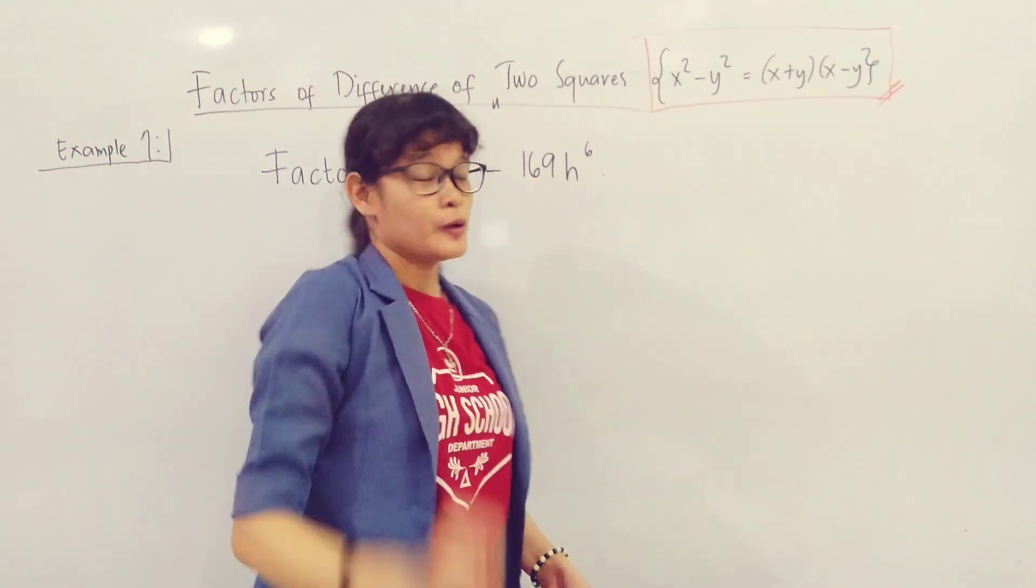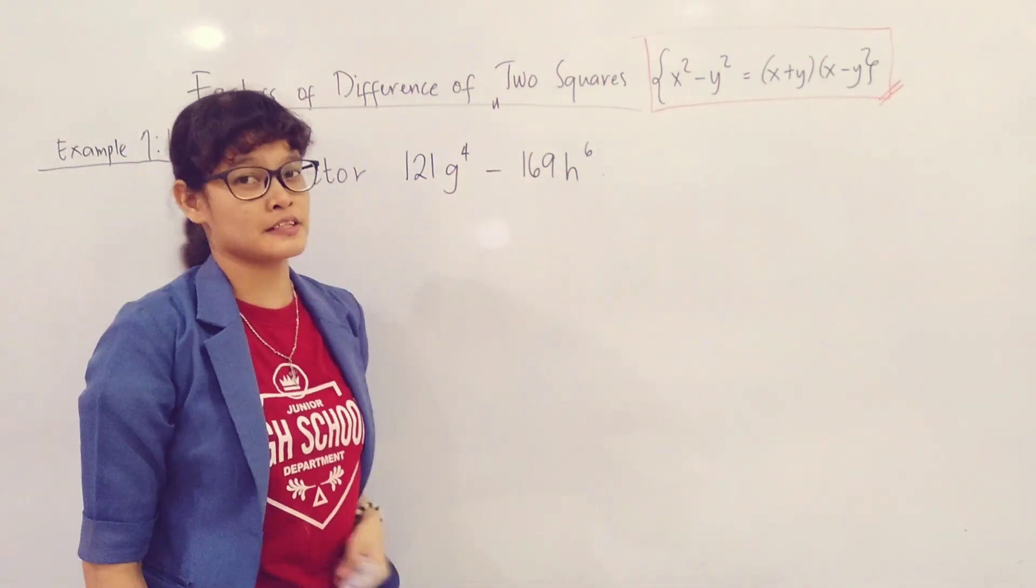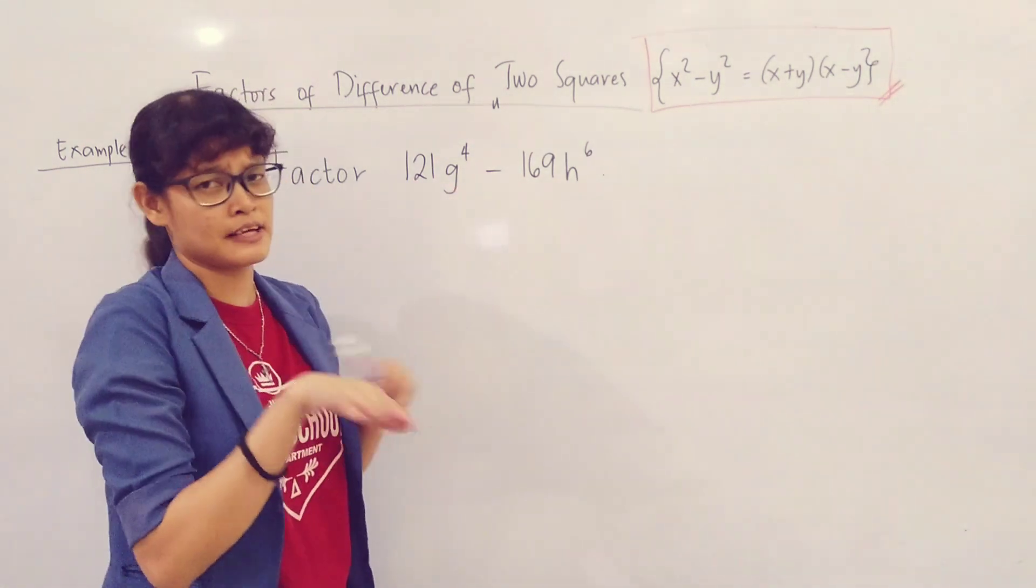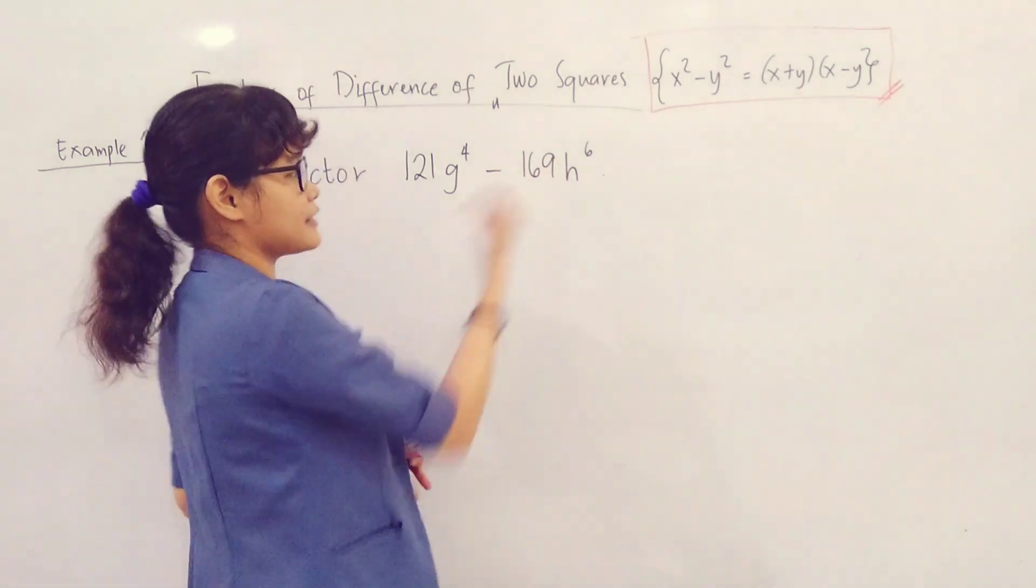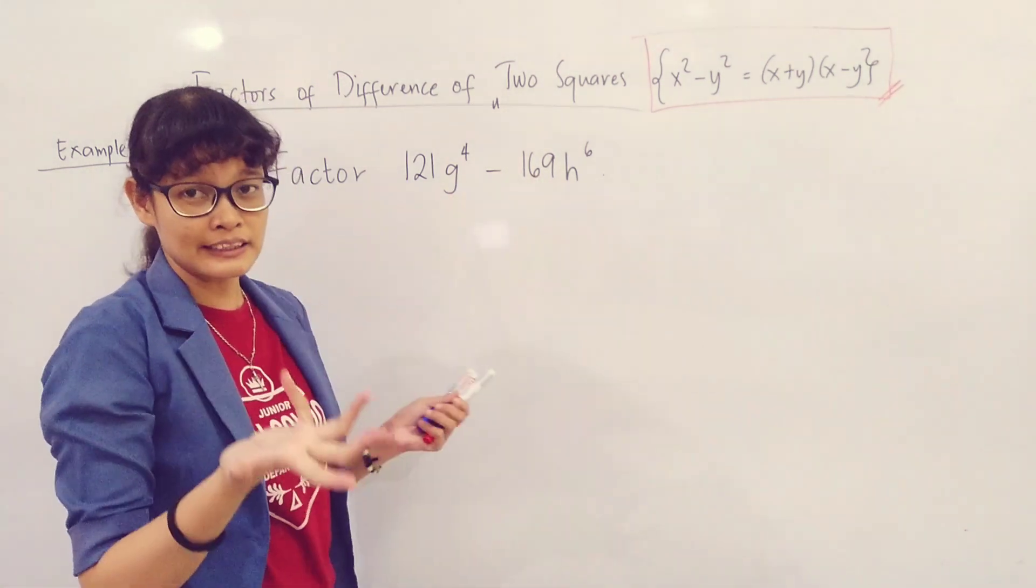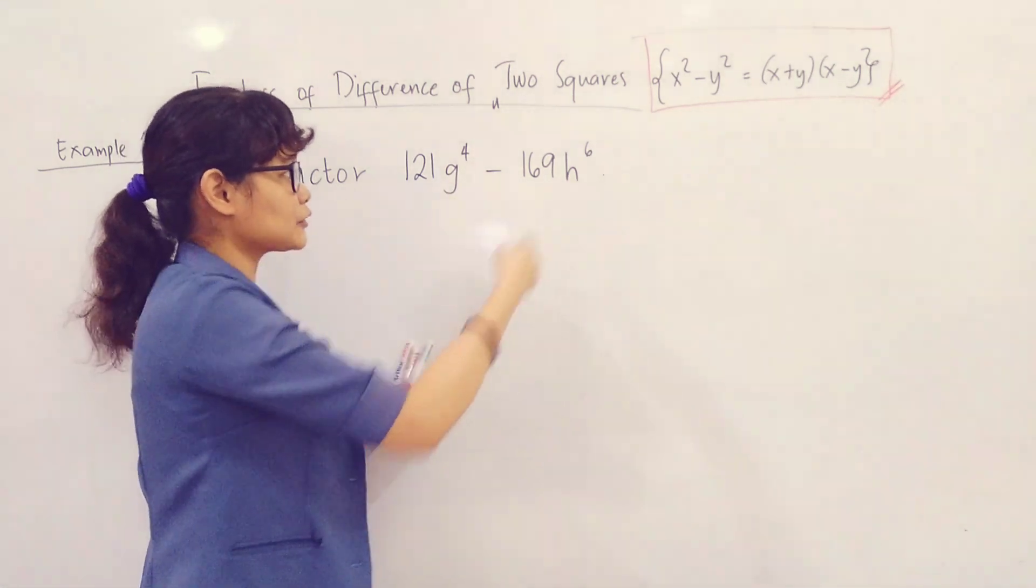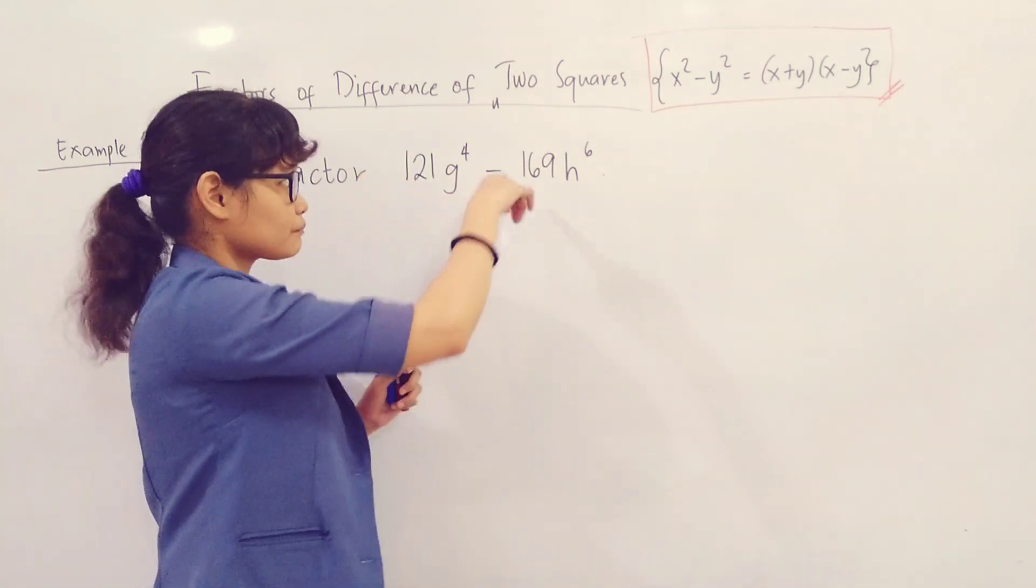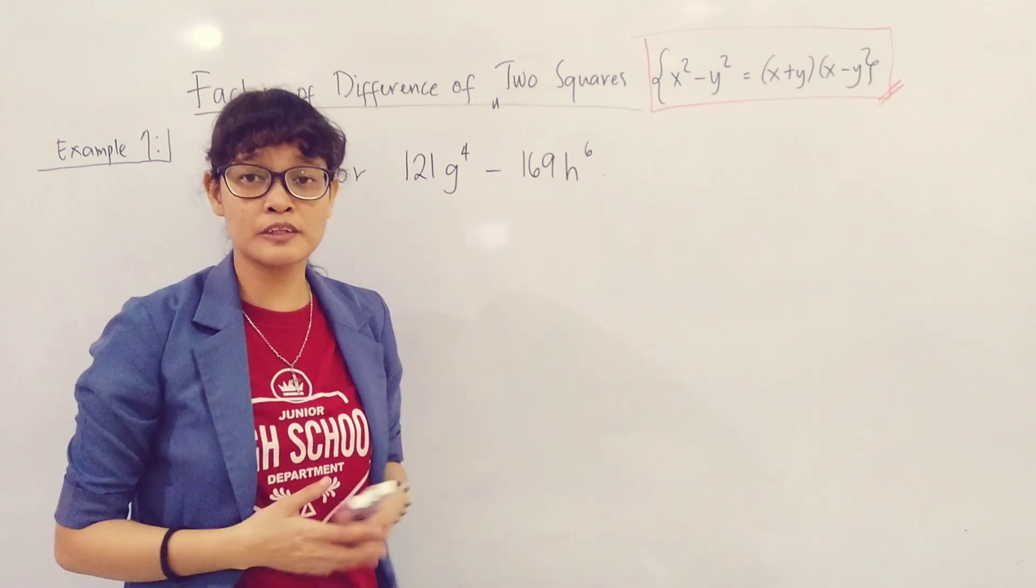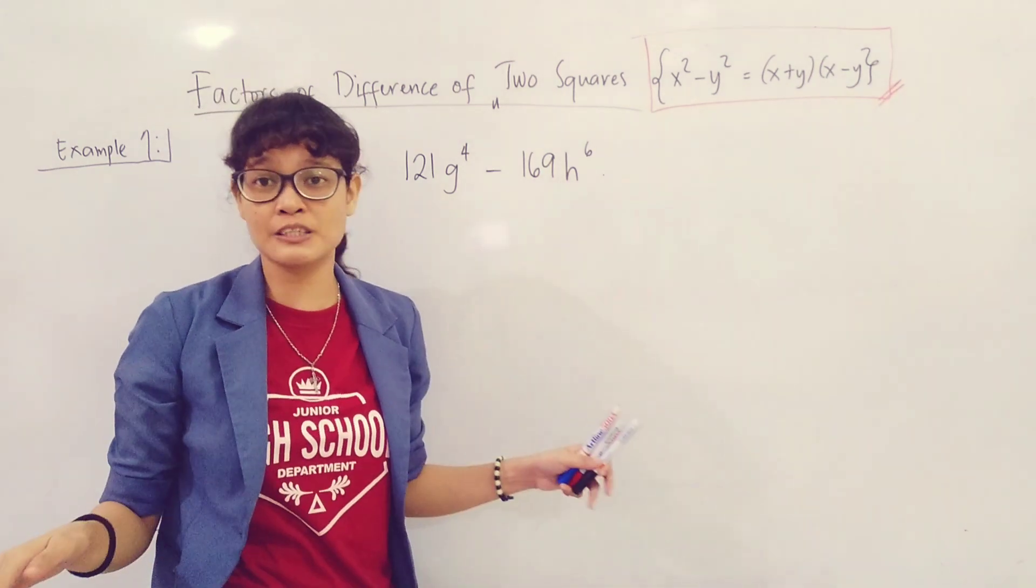Let's have example number 2. We have factor 121 G raised to 4 minus 169 H raised to 6. Check - is there a common monomial factor? They have 121 and 169, they are relatively prime with one another. Same goes with G and H. Next, is it DTS? Binomial? Check. Minus sign? Check. Let's check if they're perfect squares. 121 is a perfect square, 169 yes. G and H - look at their exponents. Are the exponents divisible by 2? You have 4 and 6. They are both multiples of 2, hence divisible by 2. Therefore both G and H are perfect squares.